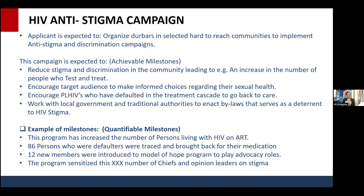In your application, we expect you to list the milestones. When you write out your proposal, what do you plan to achieve? Are they quantifiable? For example, you should be able to tell us at the end of your report how many people you reached, what you did, how many defaulters you brought back to care, and how many people were newly introduced to services — all of that.